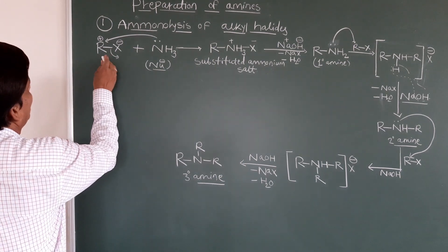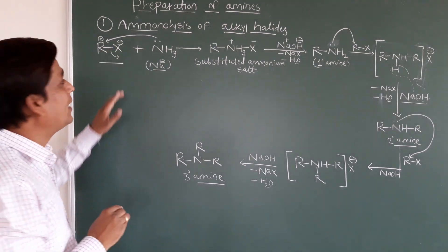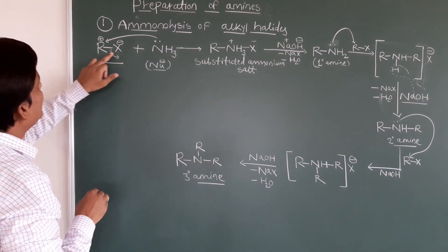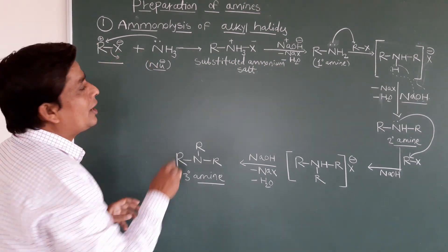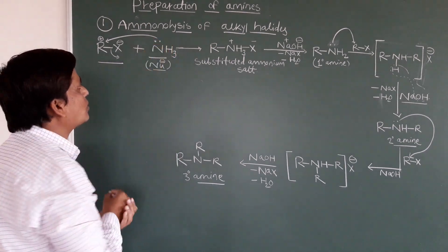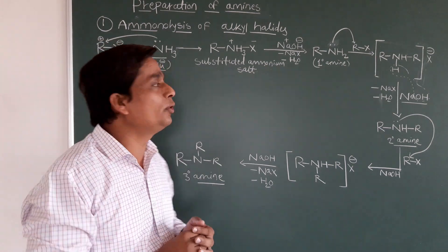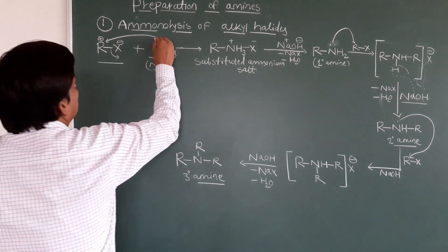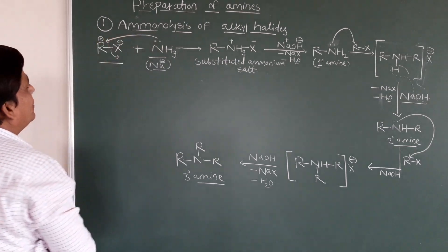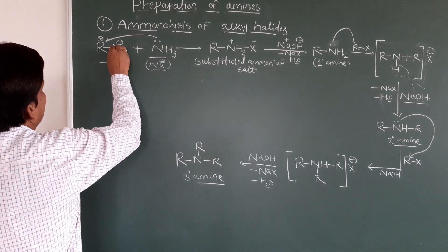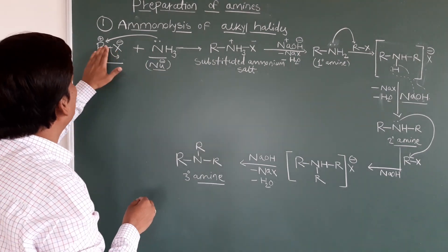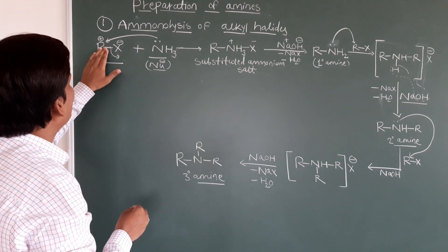Here I am taking the alkyl halide RX — you can take any alkyl group or any halogen. This alkyl halide reacts with an ammonia molecule. Ammonia has a lone pair of electrons, so it acts as a nucleophile and attacks on this carbon. Then the C–X bond breaks and X is removed; the whole ammonia molecule attaches to the alkyl group.